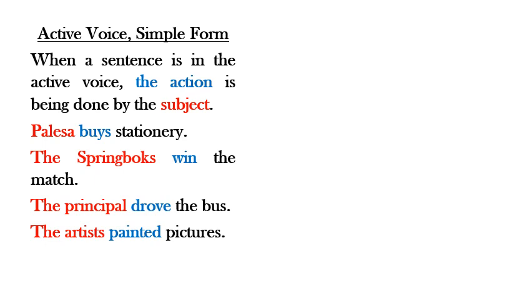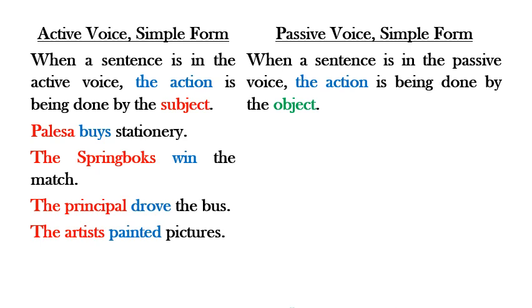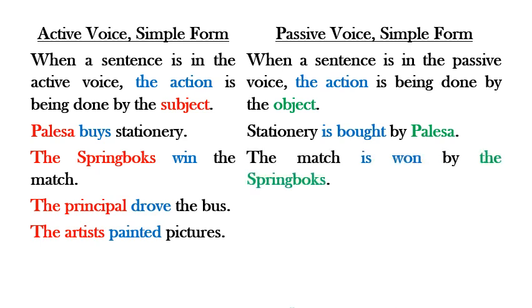Now let's take a look at the passive voice — also in the simple form of the tense. When a sentence is in the passive voice, it is the object doing the action. Taking the same sentences: 'Stationery is bought by Palasa' — Palasa is still doing the buying. 'The match is won by the Springboks' — it is the Springboks that are doing the action.